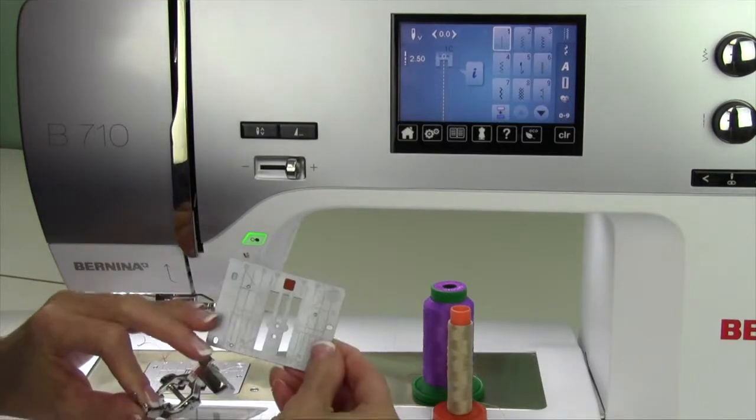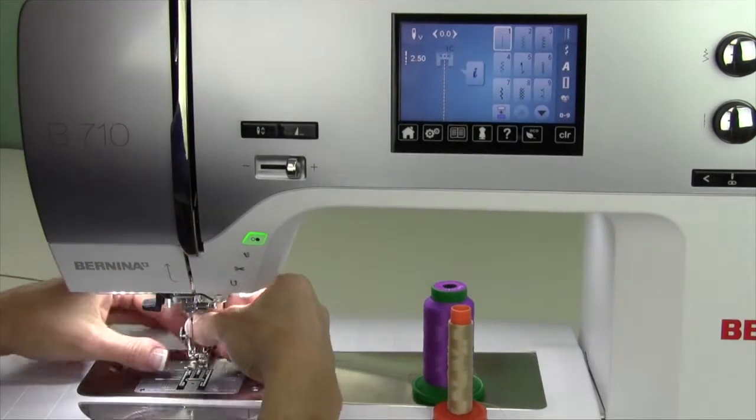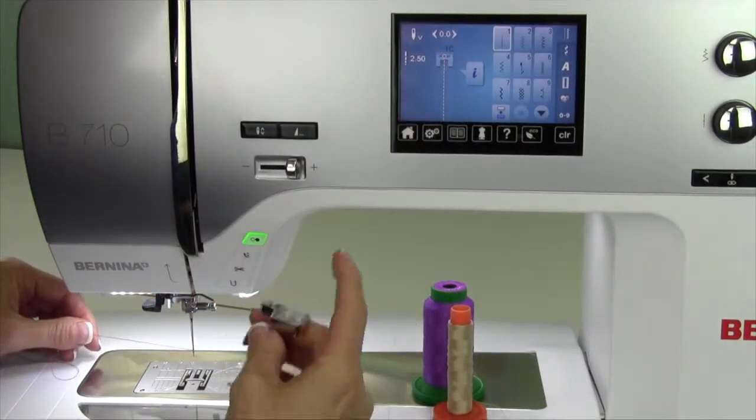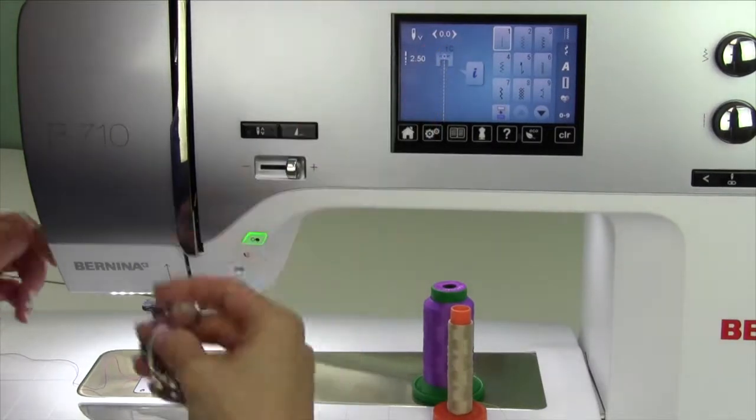I usually use it in conjunction with a straight stitch throat plate, but if I'm not using that and setting up my machine with that, watch what happens on screen when I put it on. Right now I am set for a straight stitch, center needle position, and it says 1C.